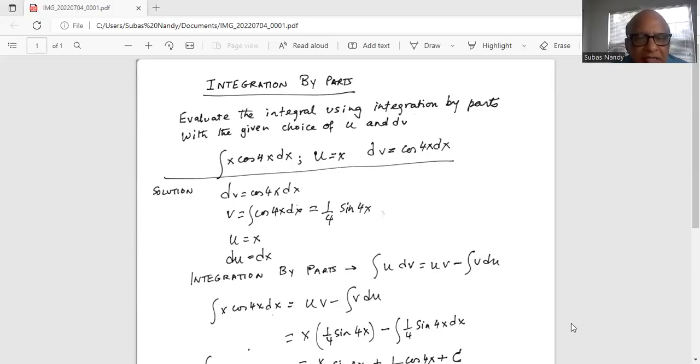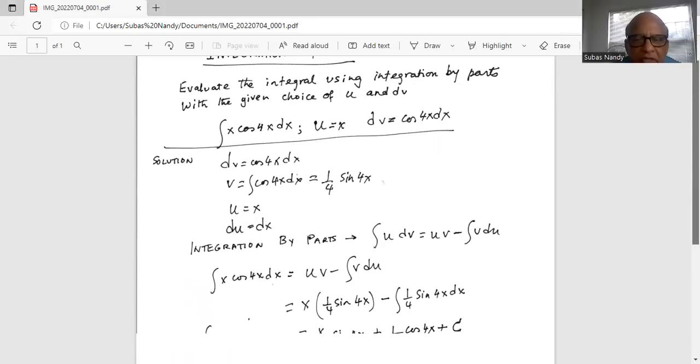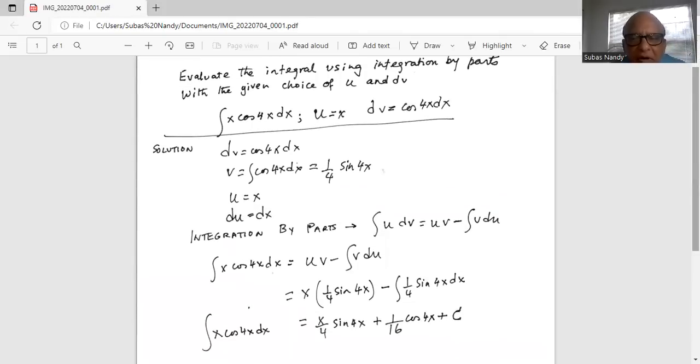u is given as x. So du is equal to dx. Now integration by parts formula. Integration u dv is equal to u v minus integration of v du.